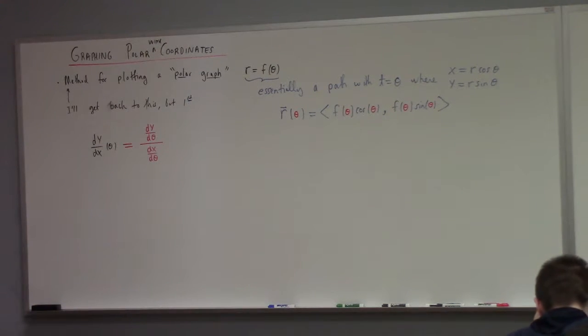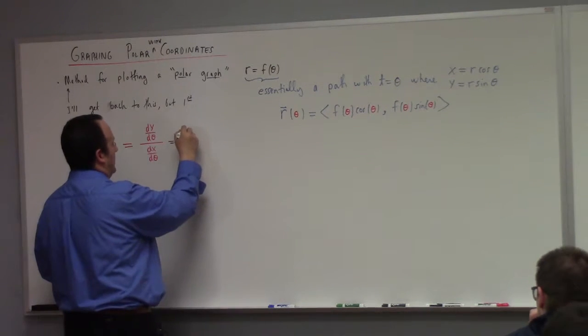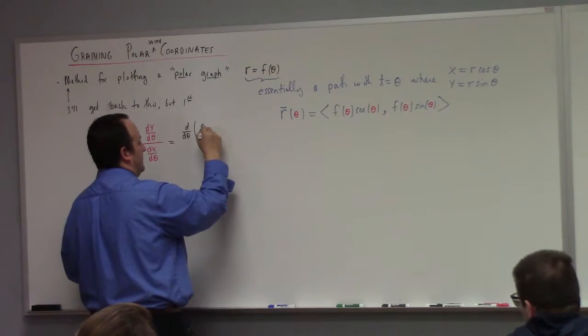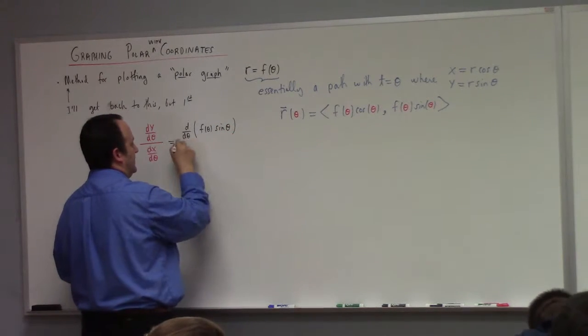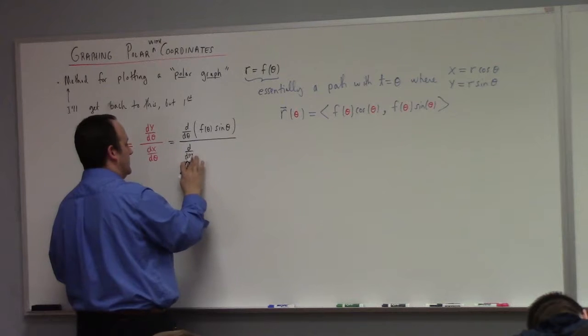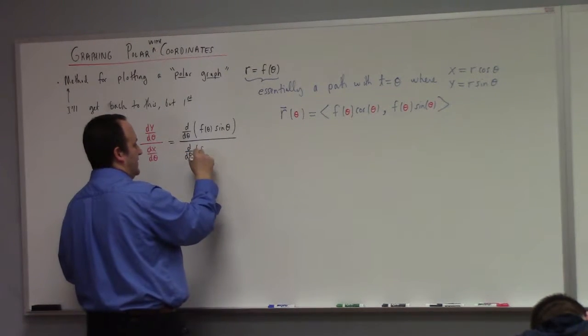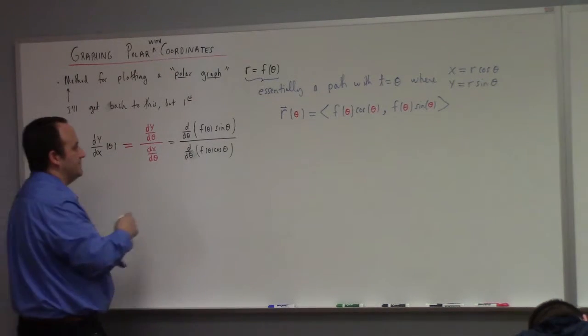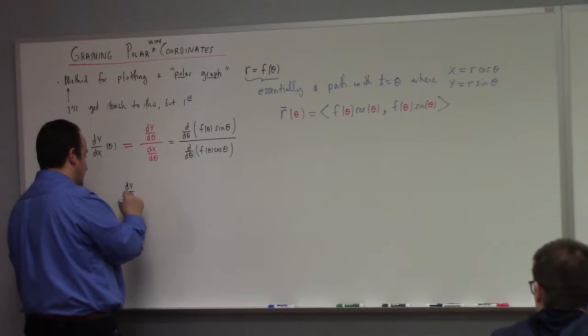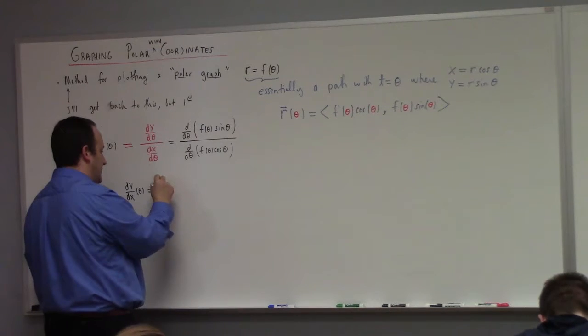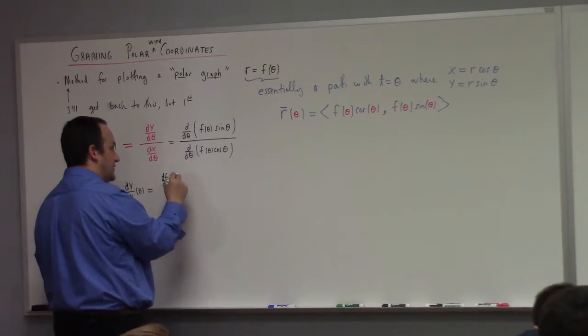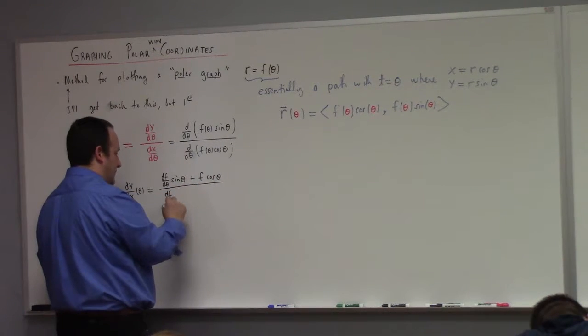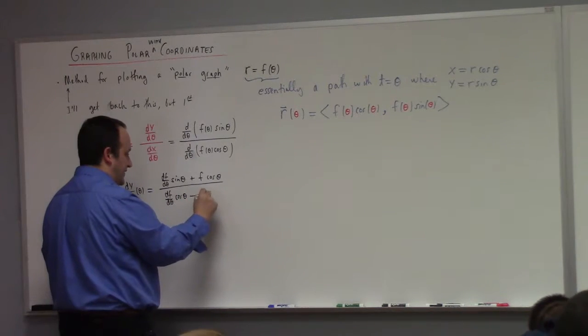And what does that work out to here? Well, y is f of theta times the sine of theta. And x is f of theta cosine theta, right? So, if we wanted to calculate the slope of a polar curve, it's kind of funny. I mean, we could do the chain rule here and figure out a formula for it. That would be df d theta sine theta, plus f cosine theta, divided by df d theta cosine theta, minus f sine theta.